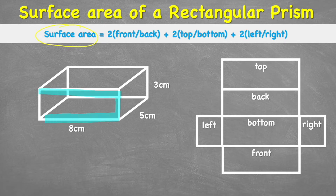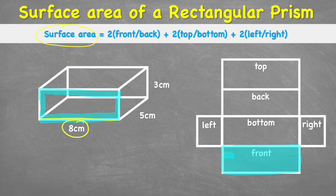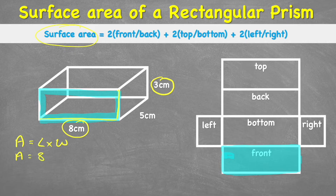Let's begin by working out the front face. We need to establish which measurements are involved. We have eight centimeters for this edge and three centimeters for the height. The formula for the area of a rectangle is area equals length times width, so in this case area equals eight times three.